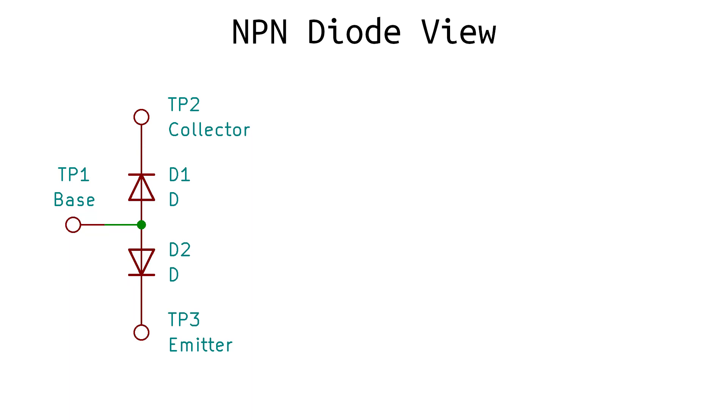We can get a better understanding of why this works when we take a look at the diode view of the transistor. We can see the two diodes pointing away from the base towards the collector and emitter, and when we reverse bias the emitter, we reach one of the two states found in the diode, either avalanche or zener breakdown.